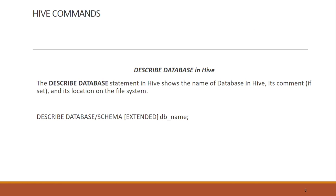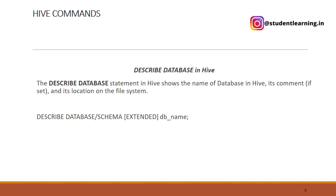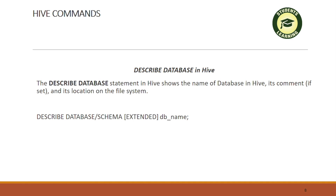The next command is the describe command. Describe command is basically used to show the name of the database in Hive and also show the location of the system. The syntax is: DESCRIBE DATABASE or SCHEMA, optionally EXTENDED, then mention the database name.